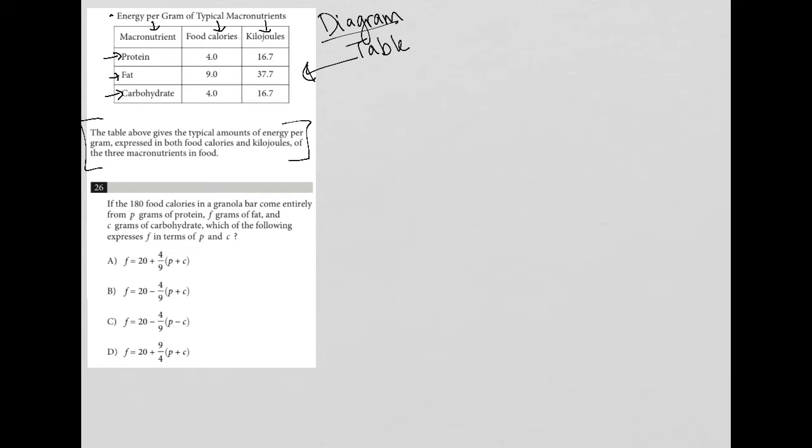So the actual question says, if the 180 food calories in a granola bar come entirely from P grams of protein, F grams of fat, and C grams of carbohydrate, which of the following expresses F in terms of P and C?